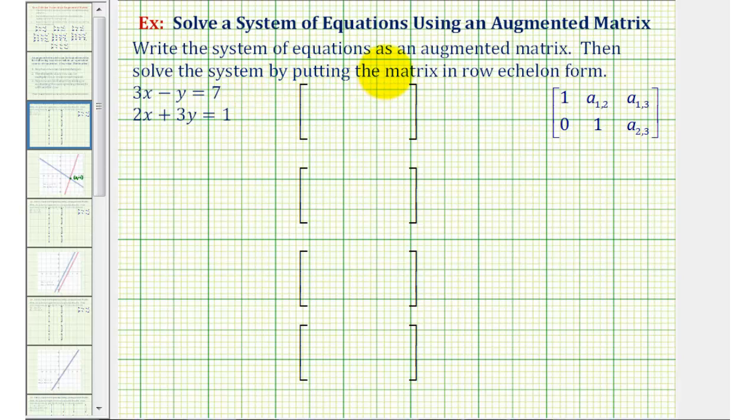We want to write the system of equations as an augmented matrix and then solve the system by writing the matrix in row echelon form. The first thing we should recognize is that we have a system of two linear equations with two unknowns, so we'll have a two by three augmented matrix.